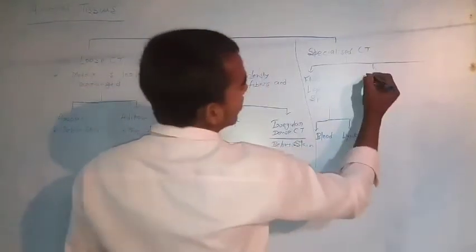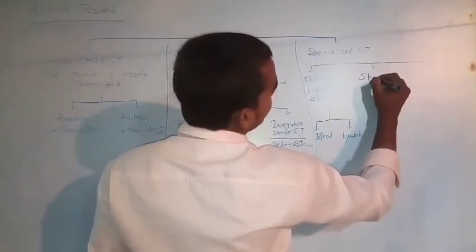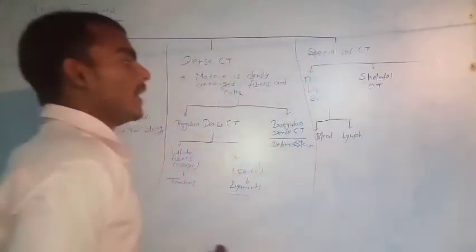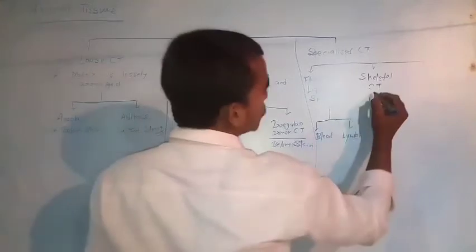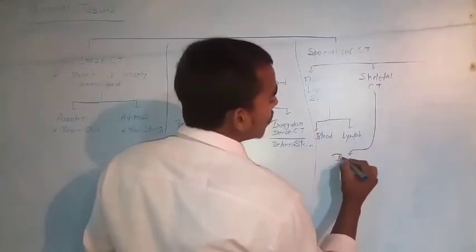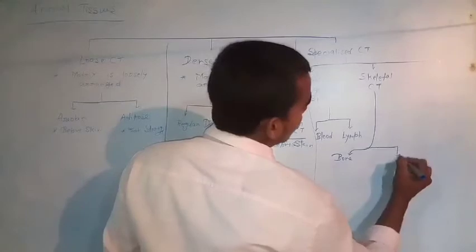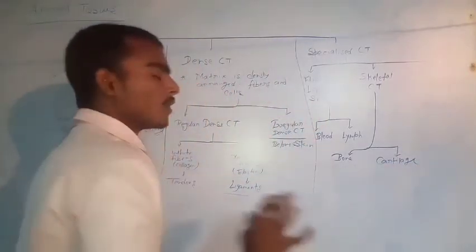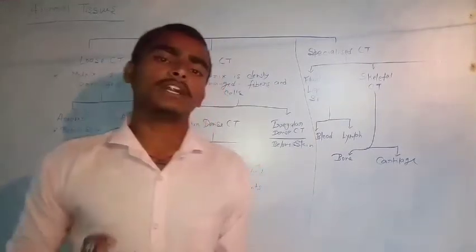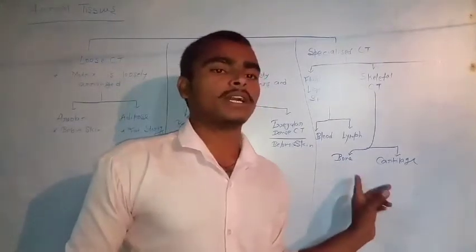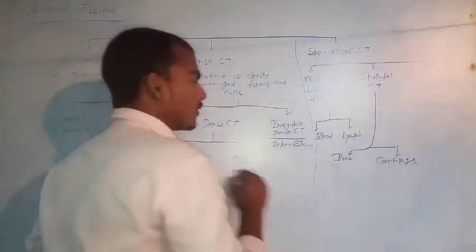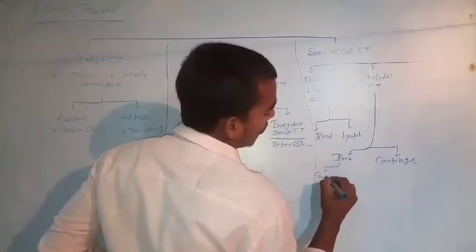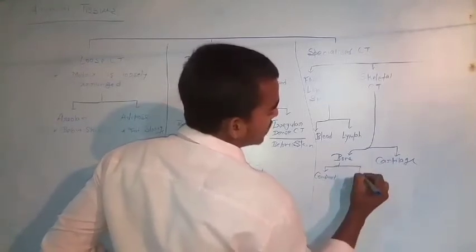The second category of specialized connective tissue is skeletal connective tissue. Skeletal connective tissues are of two basic categories: bone and cartilage. Bones are of two types: compact bones and spongy bones, based on their organization and structure.